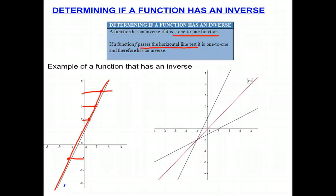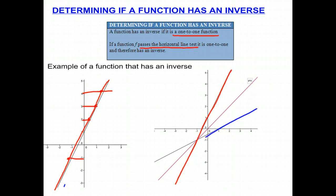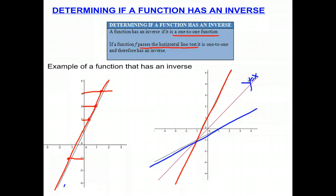If we want to graph the inverse, we do that by interchanging the x's and y's. If I reproduce the original function and interchange the x's and y's, we get the blue line. You might remember that the graphs of inverse functions are reflections of each other across the line y equals x. Notice we have the line y equals x right here, and both graphs are reflections across that line — as if the line y equals x were a mirror, and the blue line is the reflection of the red line.